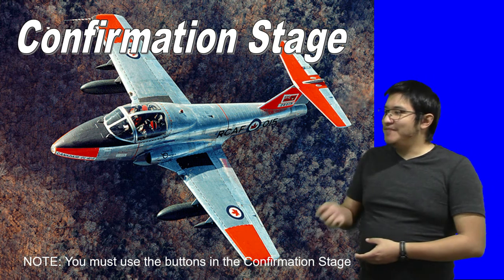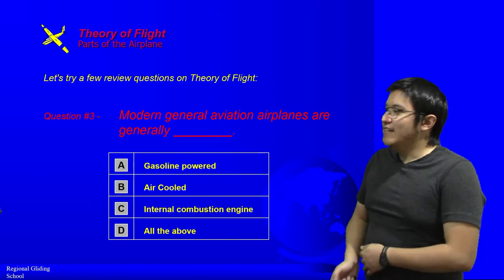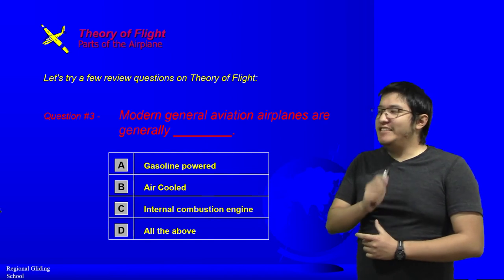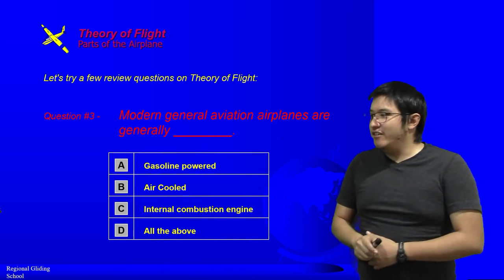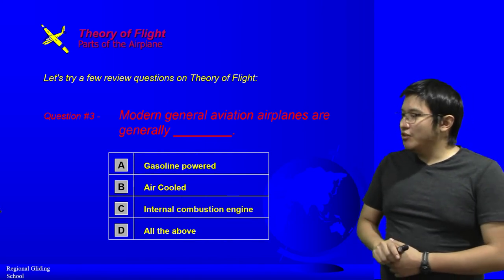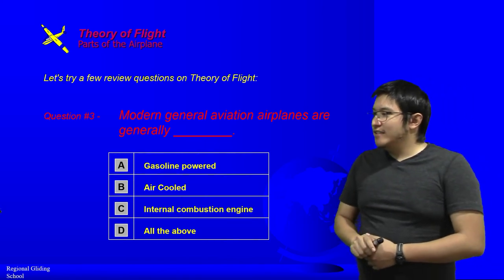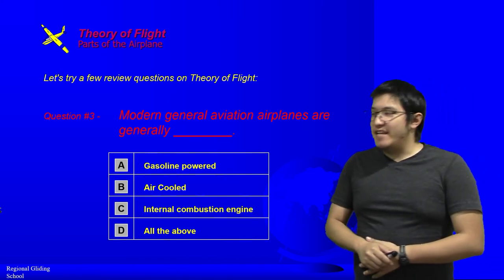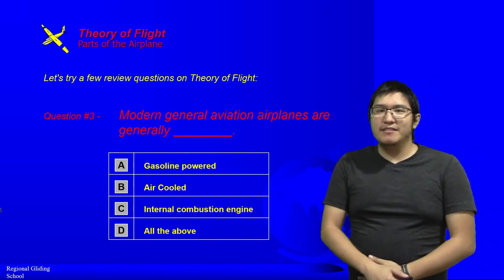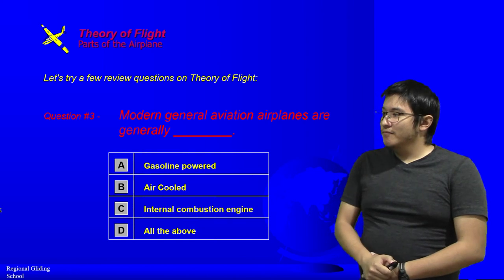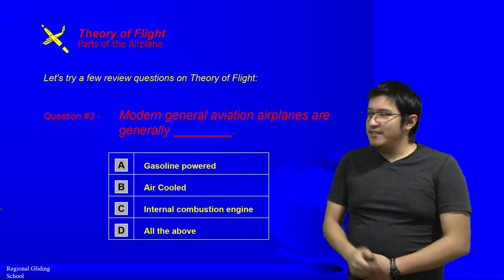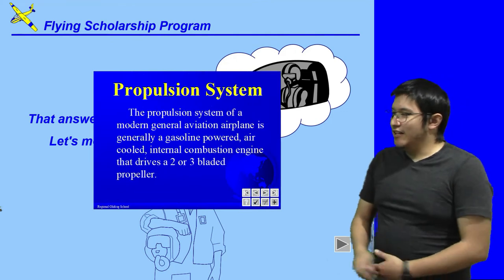Confirmation stage. Modern general aviation airplanes are generally: A) gasoline powered, B) air cooled, C) internal combustion engine, or D) all of the above. The answer is all of the above.